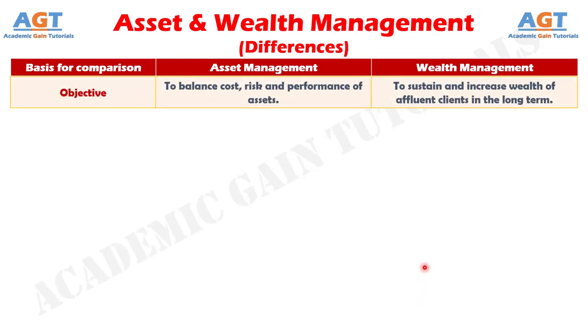Difference number 7: The objective of asset management is to balance cost, risk and performance of assets. However, the objective of wealth management is to maintain and increase the long term wealth of the affluent client.